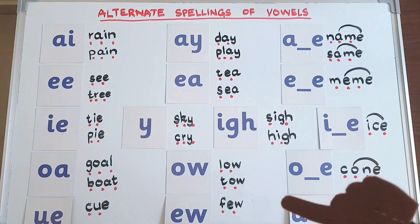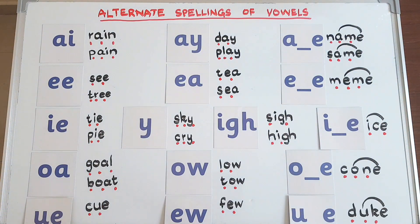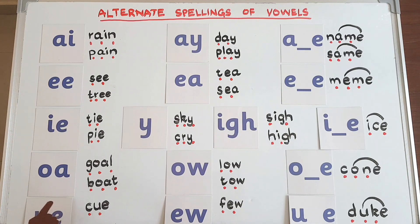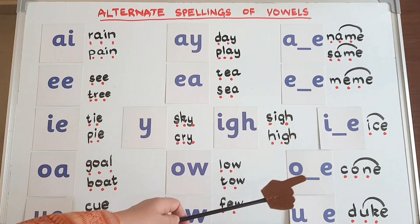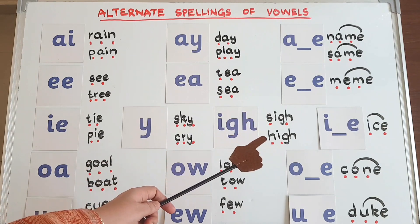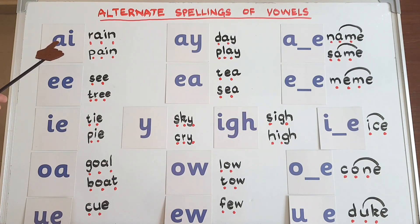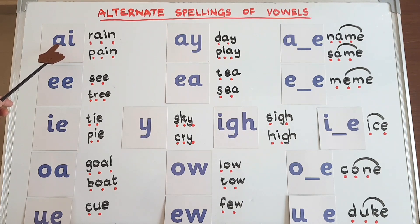Let's get straight into it. In this column we have the spellings that the child already knows — they are from the 42 spellings. And on this side of the board we have all the alternative spellings. So let's see the spelling the child already knows: this is 'ai', the long 'a' sound, as in 'rain', as in 'pain'.